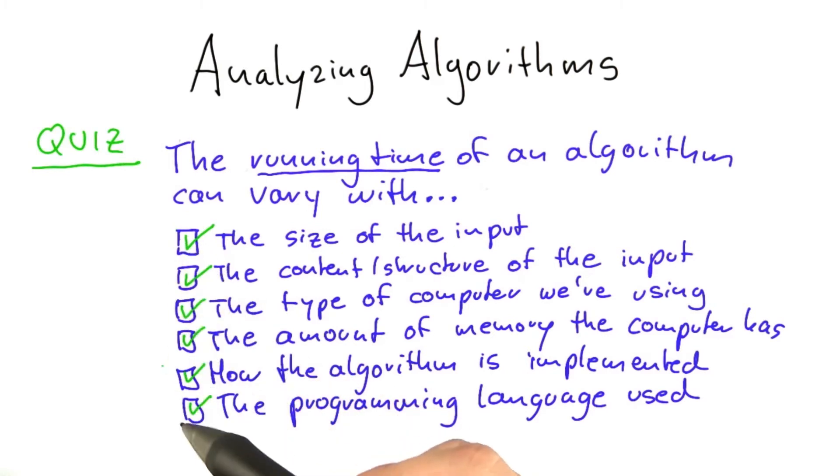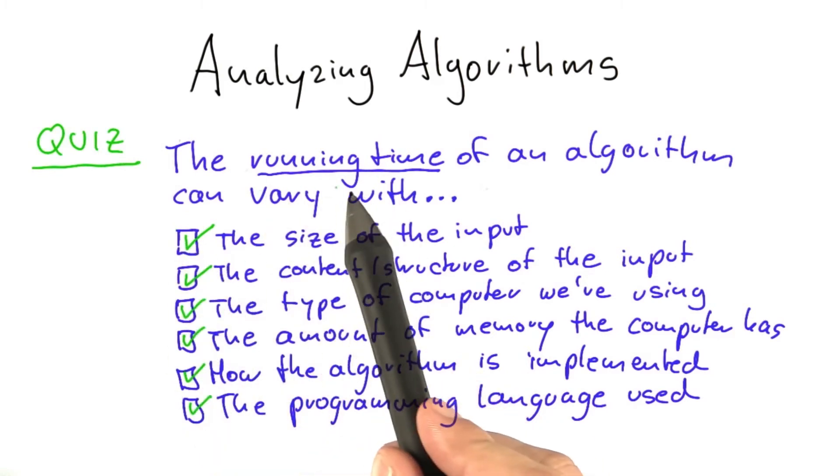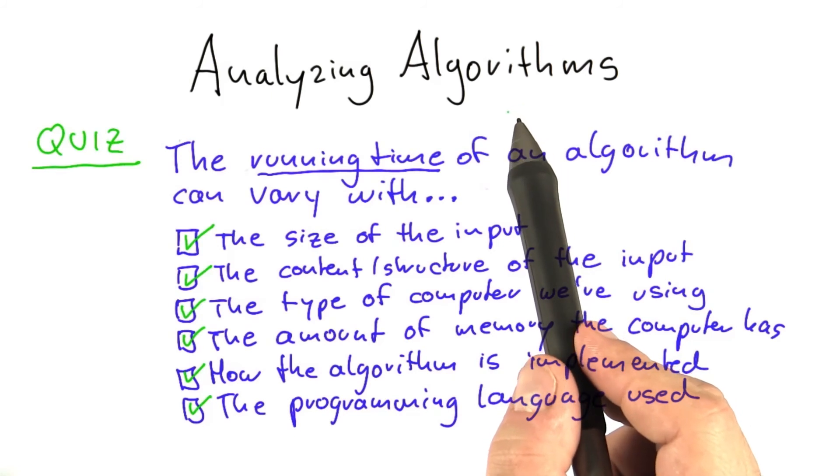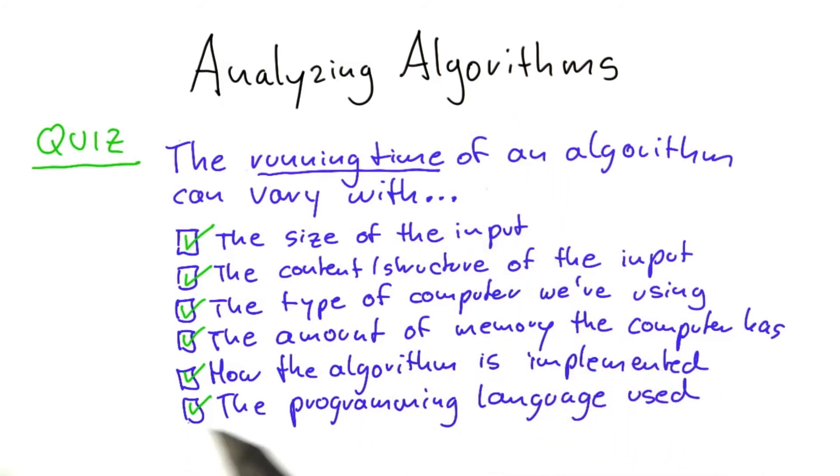That's quite a lot of factors to look at, and actually I think there are lots of other factors that will also determine the running time of an algorithm. So that's why when we talk about analyzing algorithms, we'll have to work with a number of simplifications to focus on what's really important and not have to take account of all these factors and all the countless others that you might think of.